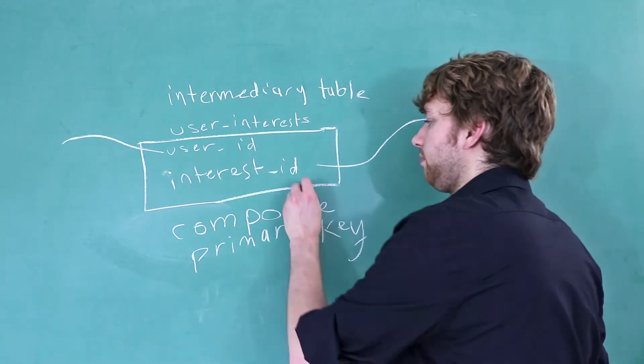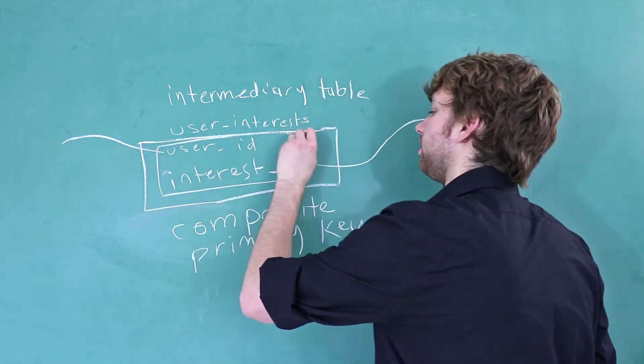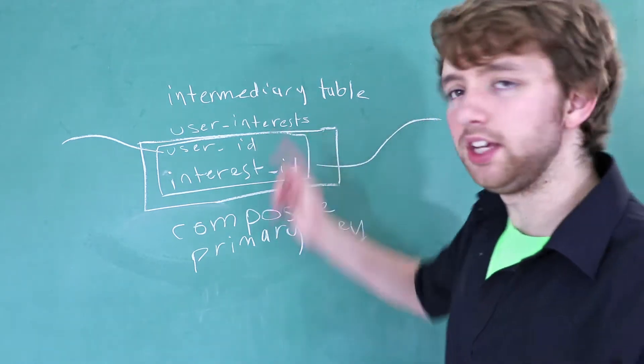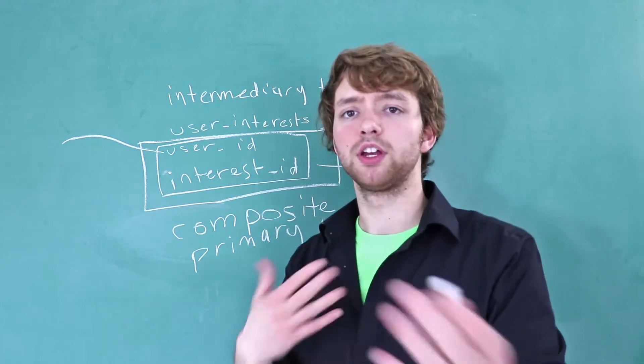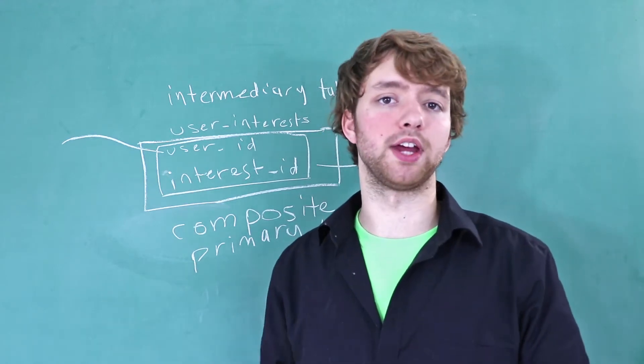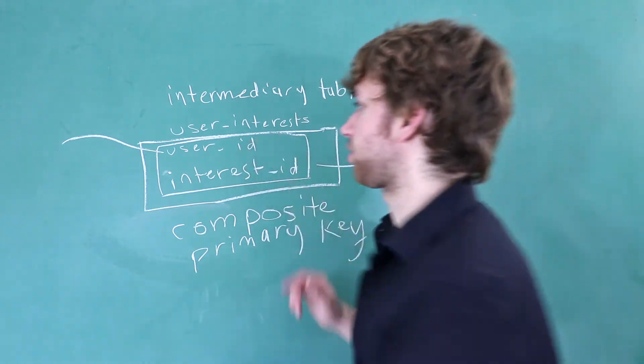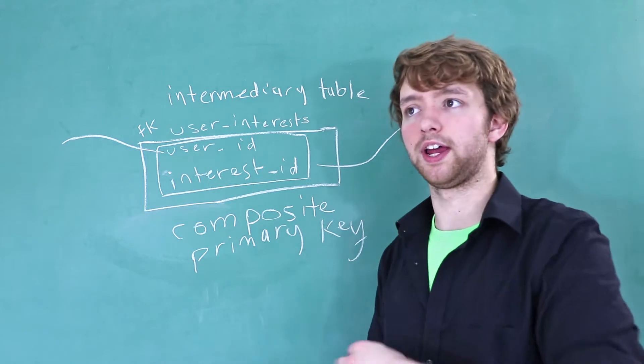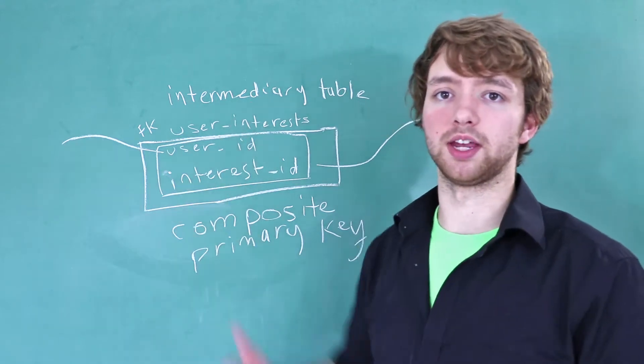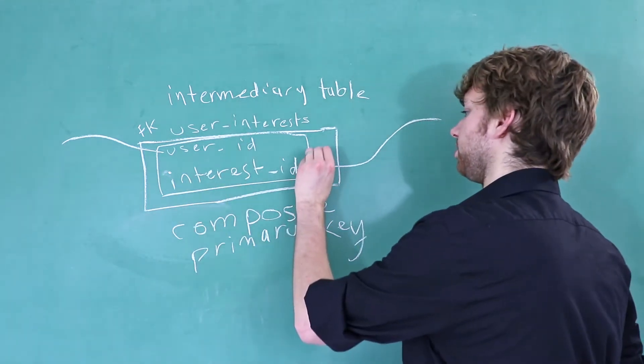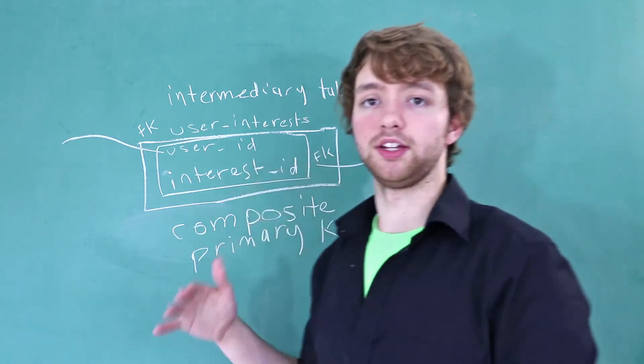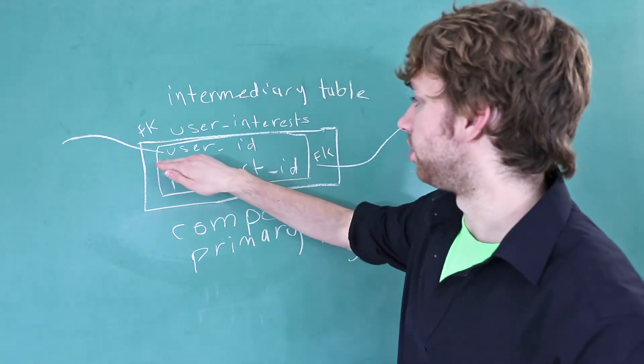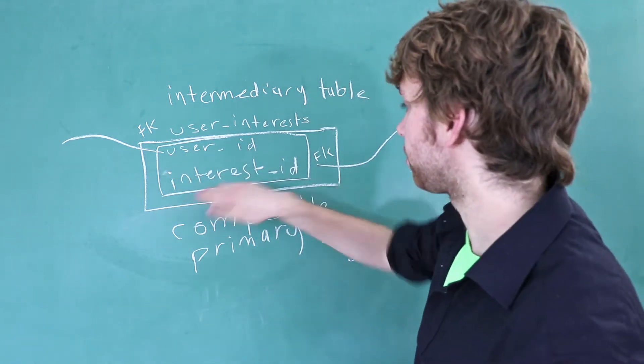So for example we can make the combination of these be the primary key. And the way that works is that the user ID can have repeating values all at once. Because you know primary keys you're not supposed to have repeating values, but this here is actually a foreign key. And foreign keys allow repeating values because you can have multiple references to the same primary key. And this down here is a foreign key as well. So we can have multiple interest IDs in the table.